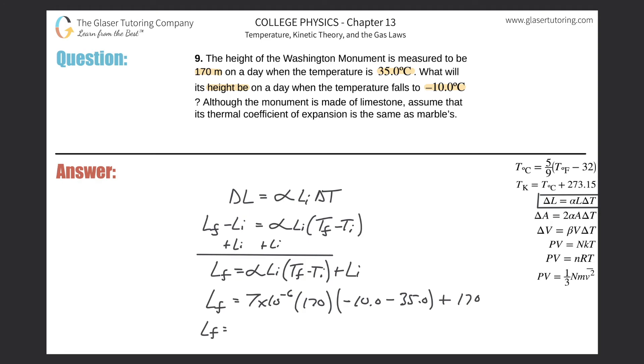So just plug it in. We get 7 times 10 to the minus 6 times 170 times (negative 10 minus 35) and then add 170.